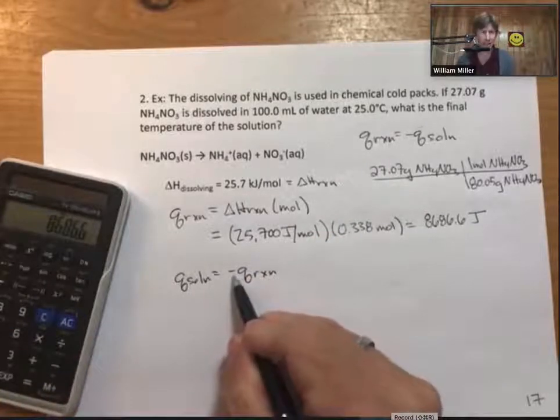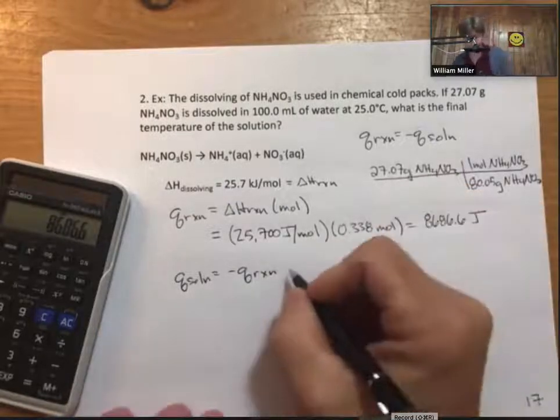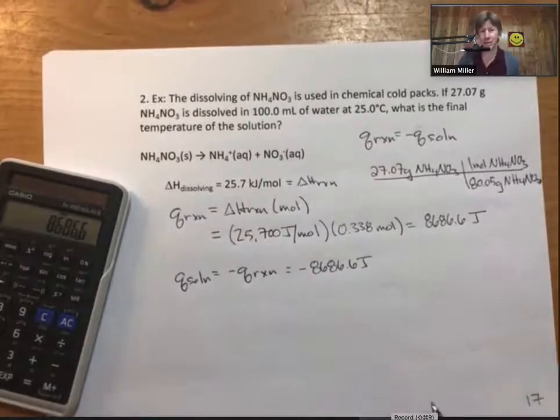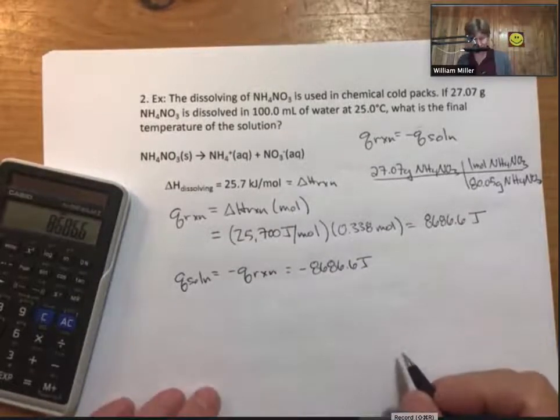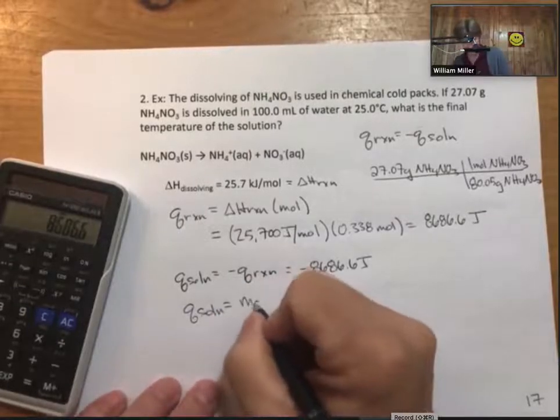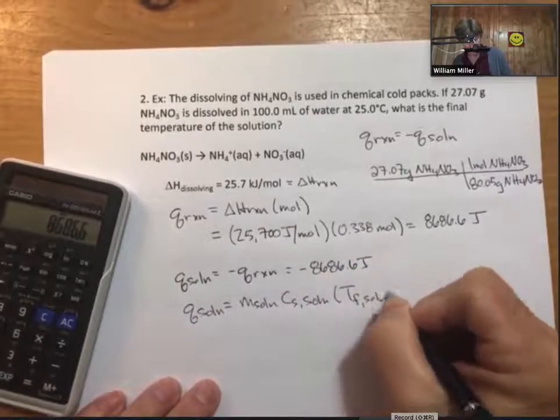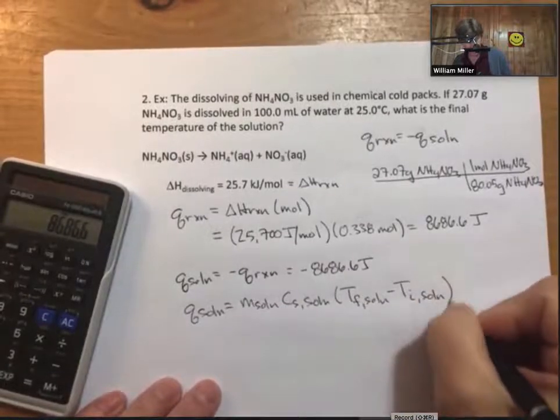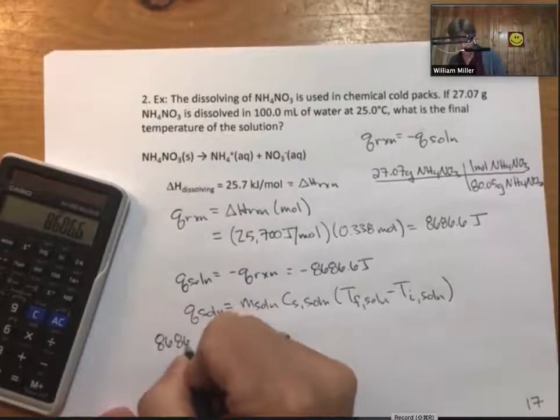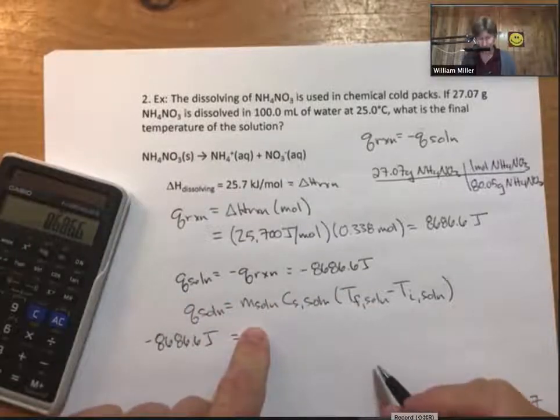As long as there's a minus sign, as long as it changes sign going from reaction to solution, either version is fine. I'm going to keep all my sig figs for now and round my final answer to three sig figs. Now Q solution equals mass of solution times specific heat of solution times T final minus T initial of my solution. Let's plug everything in we know. I know my Q solution is negative.